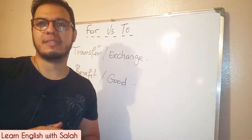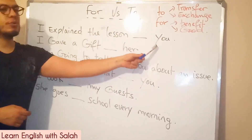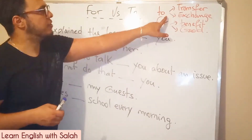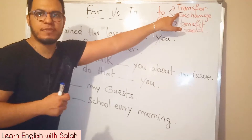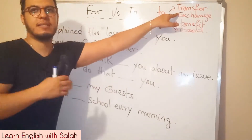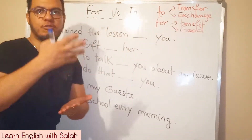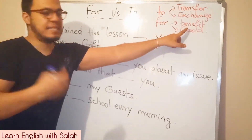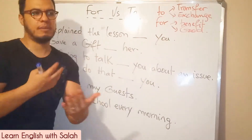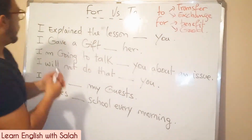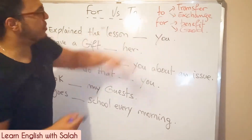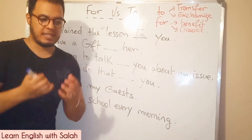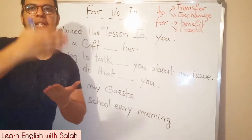Let's move to the practice. 'I explain the lesson' — is it 'to you' or 'for you'? Let's go back to 'to': it means a transfer, something that moves from me to somebody else. Here we use 'to' because it is a discourse that moves from me to somebody else — I transfer speech from me to somebody else. So: I explain the lesson to you.